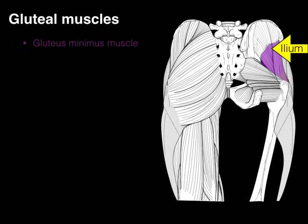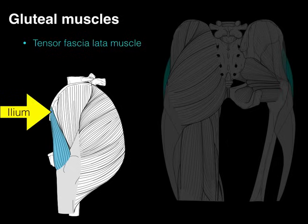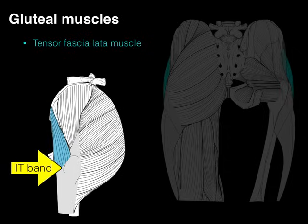Gluteus minimus — it's the smallest one, baby bear. It arises from the back of the ilium and goes down to the greater trochanter of the femur, just like the medius does. Then our tensor fasciae latae looks like it's part of the anterior thigh muscles, but it's innervated by the same nerve as the medius and minimus. The tensor fasciae latae arises from the front of the ilium and inserts on the IT band as well as the gluteus maximus.